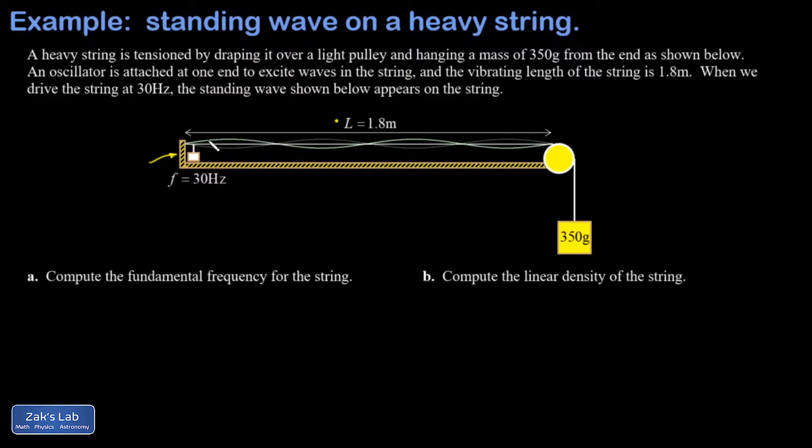We notice that the standing wave we're looking at has four antinodes, and we're told the frequency of oscillation that excited this standing wave is 30 hertz. The string is tensioned by draping it over a pulley and hanging a mass of 350 grams off of it. In part A, we're asked to find the fundamental frequency for the string.